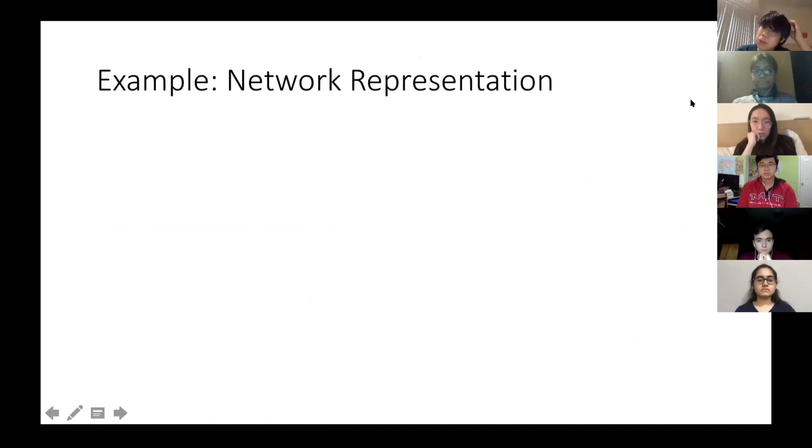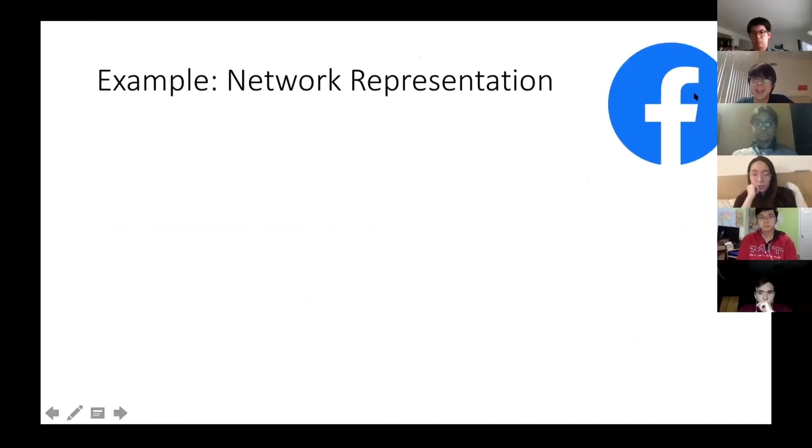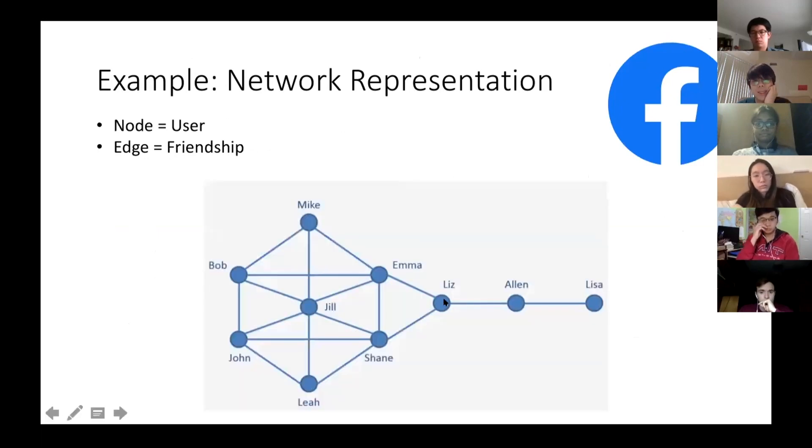I also have some examples so you can probably have a better understanding. The example I'm going to use is network representations. You guys have probably seen Facebook before. Facebook actually has a very nice way to present the network as a graph. You can have the node to represent a user, and edge to represent the friendships between any two users. For example, this diagram here, you can see Liz. Liz has edge that connects to Emma, Shane, and Alan. That means Liz has three friends, which is Emma, Shane, and Alan.